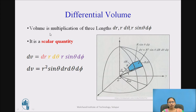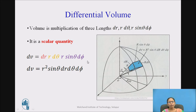Differential volume is the multiplication of all three lengths: dr, r·dθ, and r·sinθ·dφ. Volume is a scalar quantity, so dv = dr · r·dθ · r·sinθ·dφ, which gives dv = r²·sinθ·dr·dθ·dφ. This is the differential volume in the spherical coordinate system.